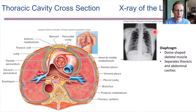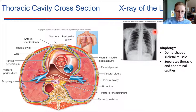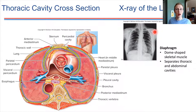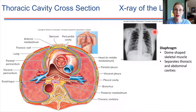Let's look at a cross-section of the thoracic cavity together. I want you to take in the space utilization here. The thoracic cavity, which is above the abdominal cavity, contains the heart — we've seen the heart in an earlier chapter.